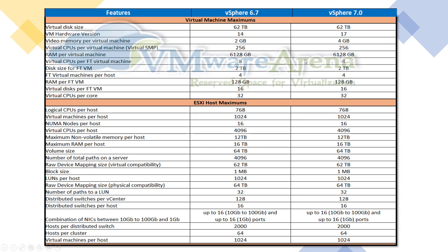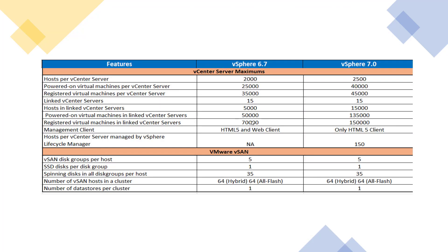For general VM and ESXi configuration maximums, there are not many differences between 6.7 and 7.0. The hardware version changes from 14 to 17, but virtual disk size, memory, and vCPU counts remain largely the same. There are significant improvements to vMotion and DRS, and native Kubernetes support means you no longer need external tools to manage cloud-native applications.